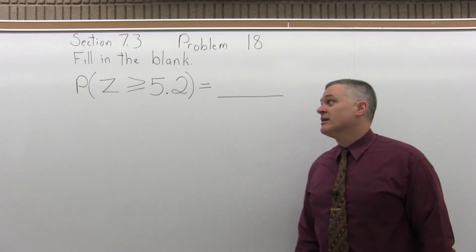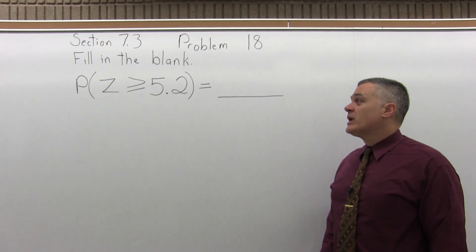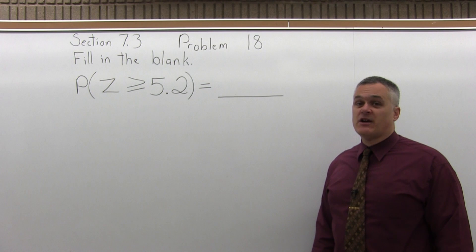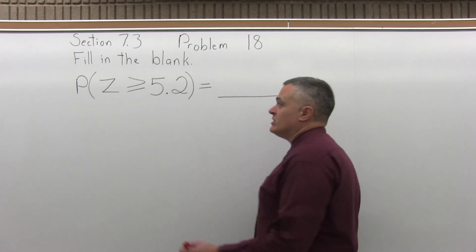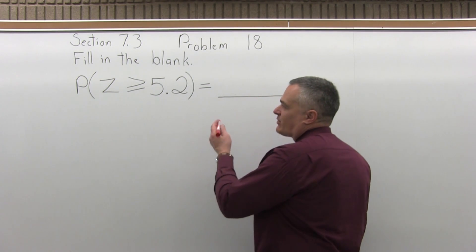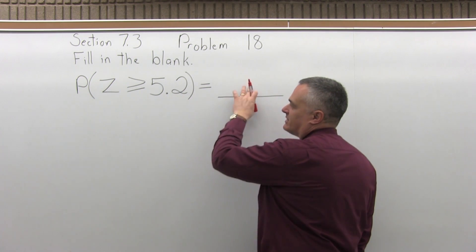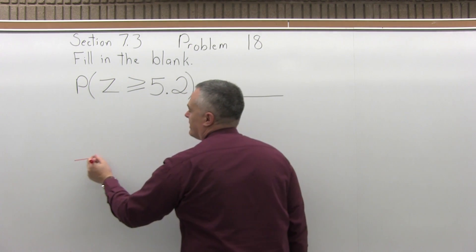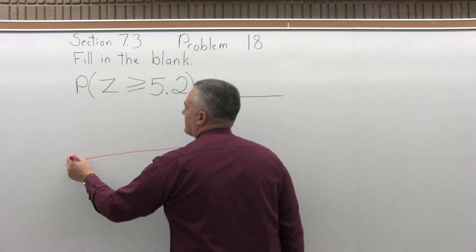It says fill in the blank: the probability that Z is greater than or equal to 5.2. I know the answer right away — I've gone off the chart. The answer is going to be 0, but let's see why.